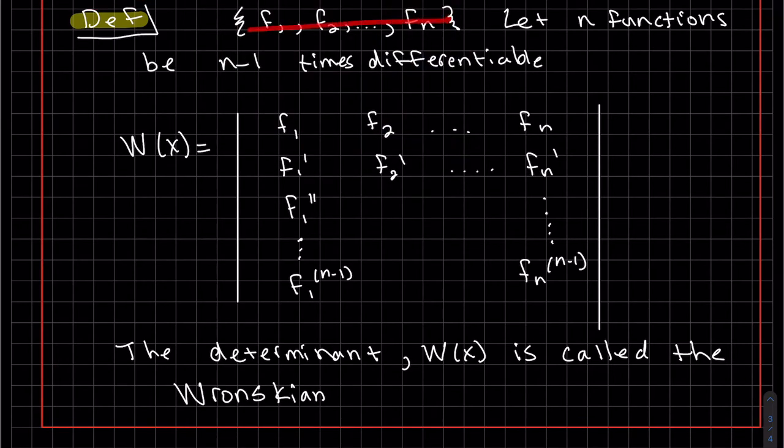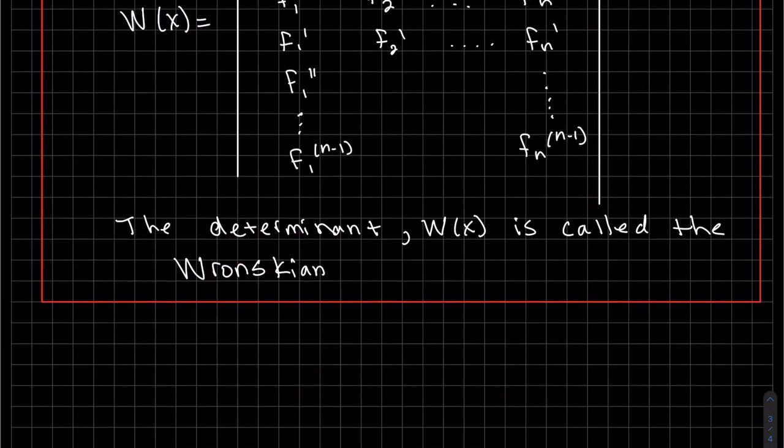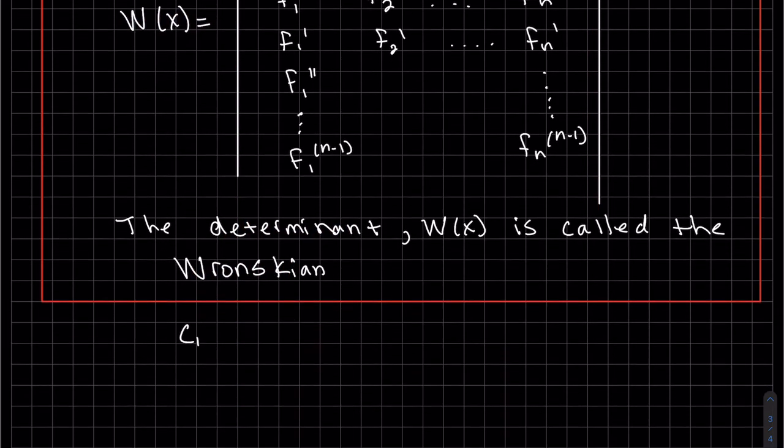So we have a set of functions that are n minus 1 times differentiable. We lay across all of our functions across the top. The second row is the derivative of all those functions. And then the second derivative and so forth to the n minus 1 derivative. So that we've made a square matrix. The determinant of this we call w of x, which is the determinant. And we call that determinant the Wronskian.